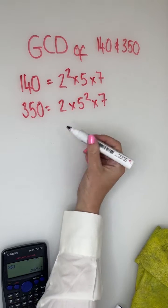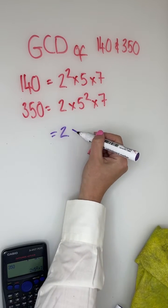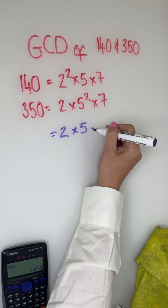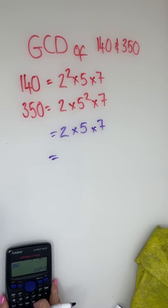So that's only got one 2, that's got two 2's, so you can only take one 2 out. That one's got one 5, that's got two 5's, so you can only take one 5 out. And they've both only got one 7. You can put that in your calculator.